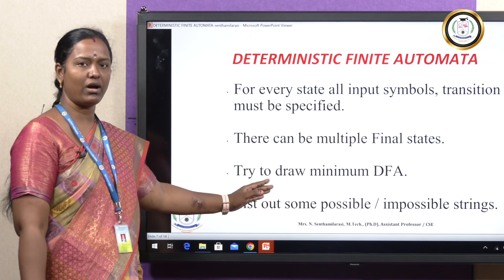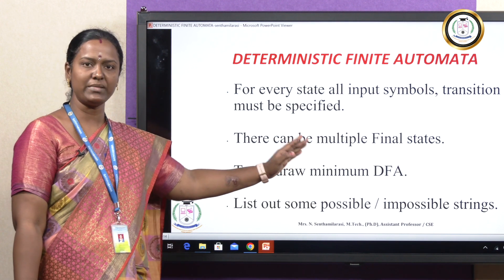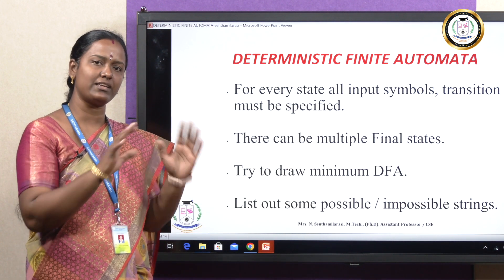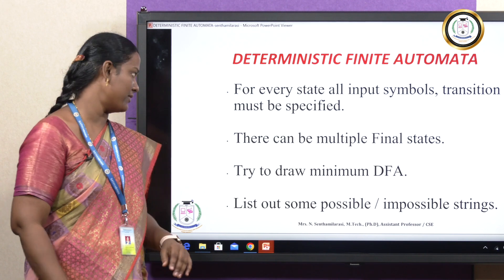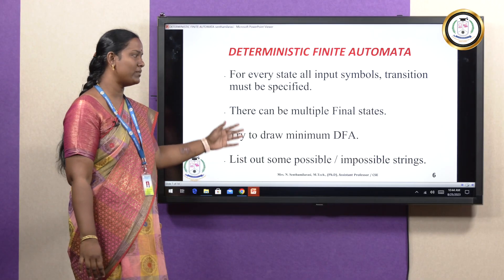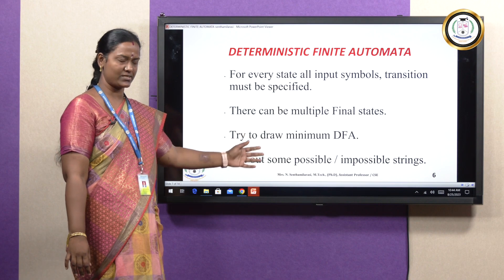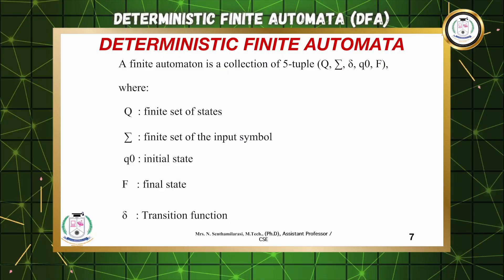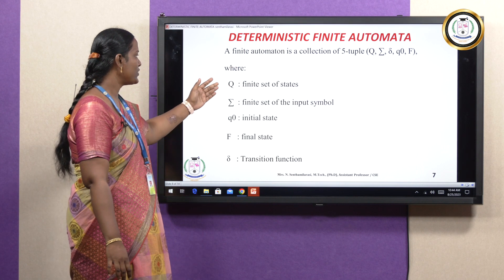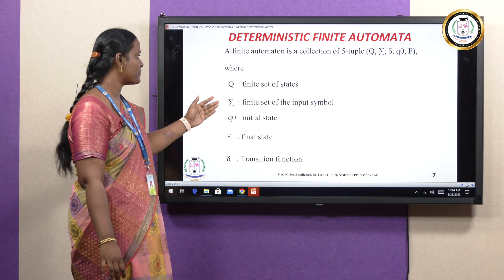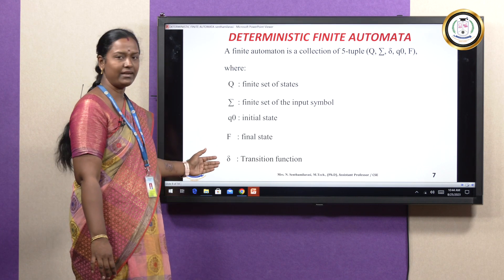We need to draw a minimum DFA, meaning we need the minimum number of states. We can list out all possible and impossible strings. A finite automaton is a collection of five tuples: Q, sigma, Q naught, F, and delta.